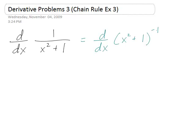So now it's pretty obvious that we have a chain rule thing going on here. We have x squared plus 1 taken to the minus first power.